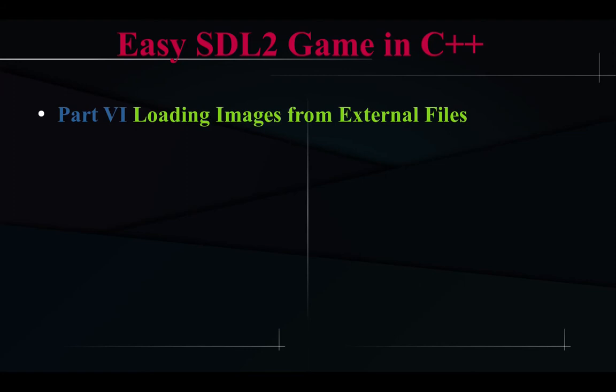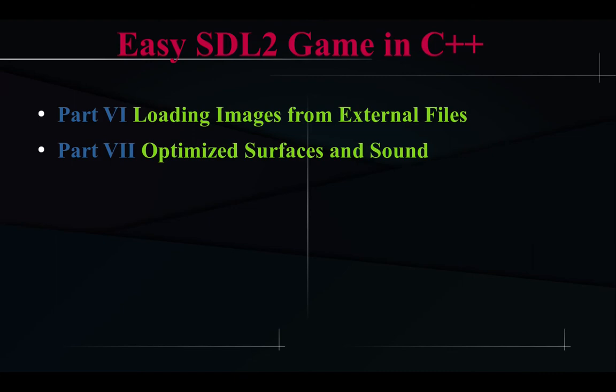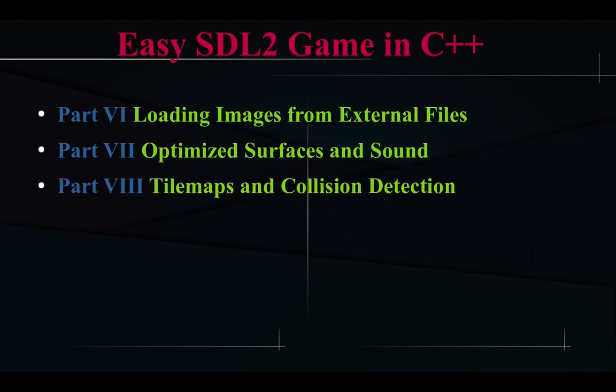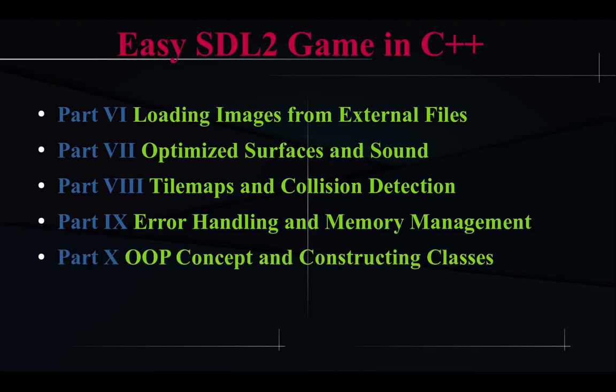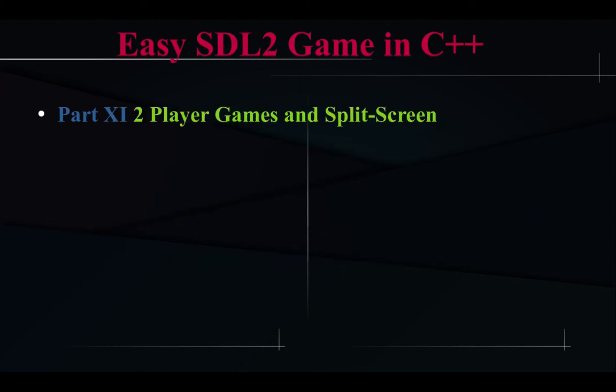Then we will talk about loading images and other external files, moving on to optimized surfaces and sound, using tile maps and collision detection. In part 9, we will talk about memory management techniques. In part 10, we will discuss object-oriented programming concepts and constructing better classes. In part 11, we will discuss a two-player game by using split-screen functionality, as well as some network support.